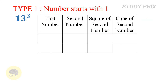Let's go to the questions. For Type 1, the problem is to find the cube of 13. This is the first number (1) and second number (3). In the table, write the first number 1 in the first column and second number 3 in the second column. In the third column write the square of the second number: square of 3 is 9. In the fourth column write the cube of the second number: cube of 3 is 27.